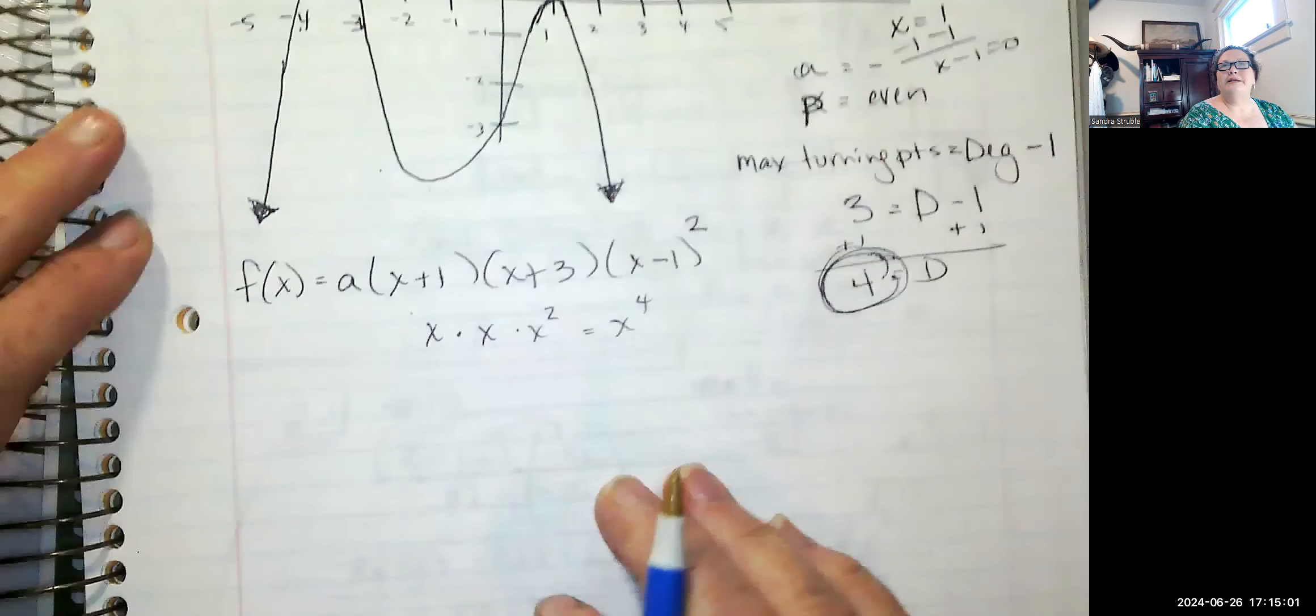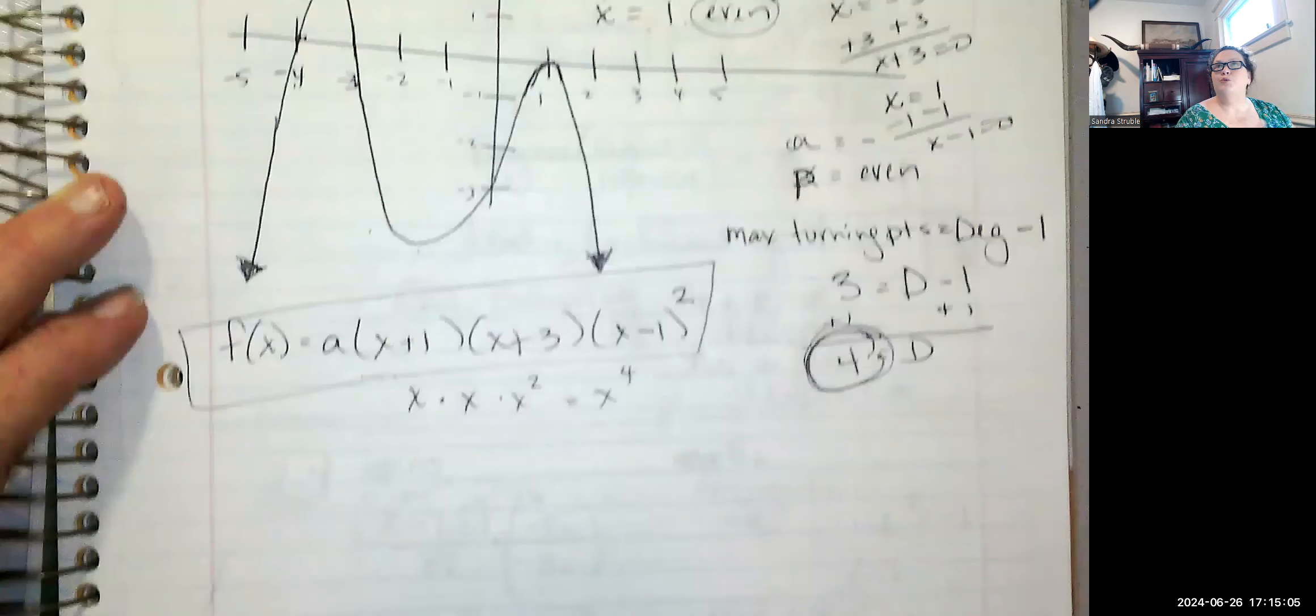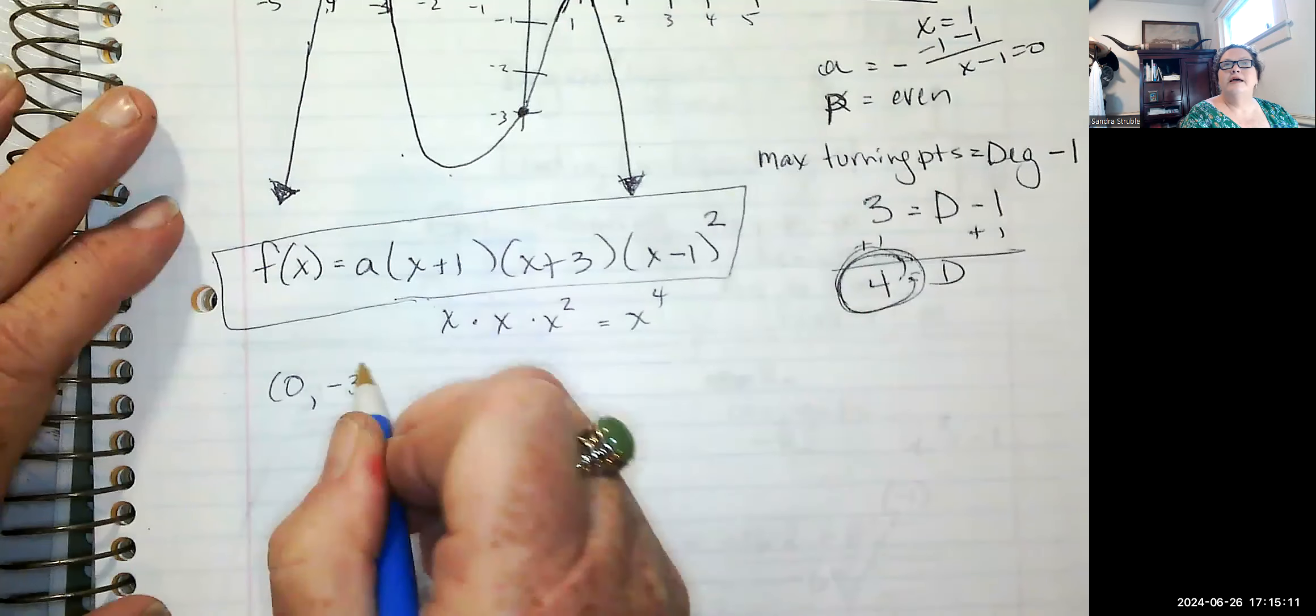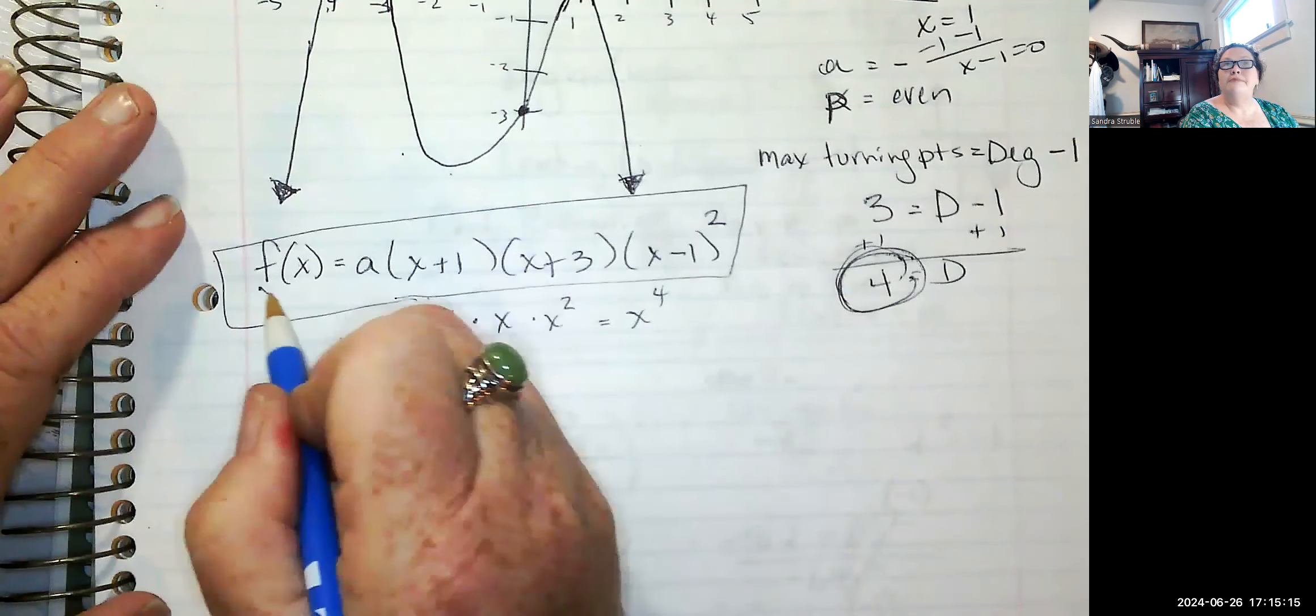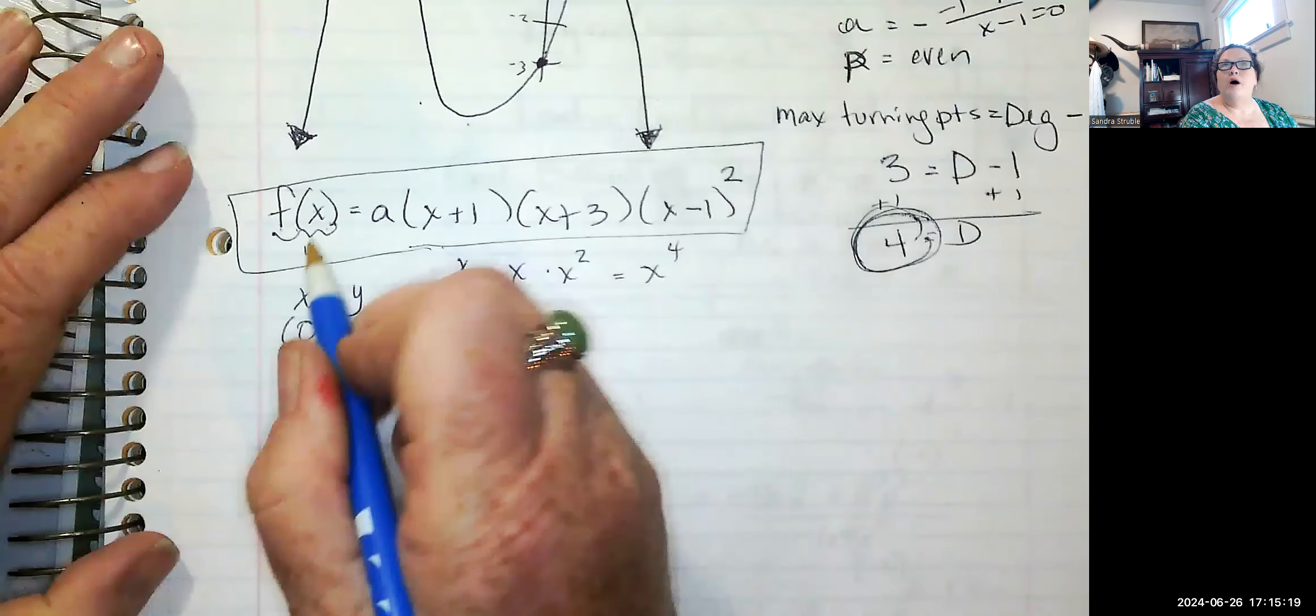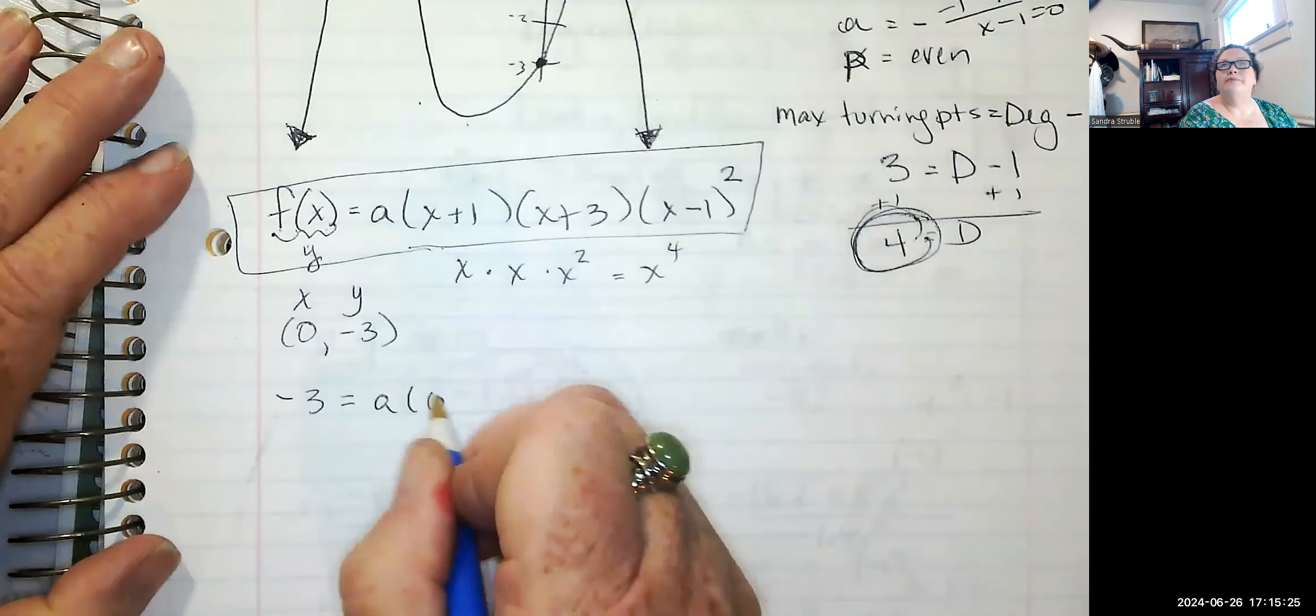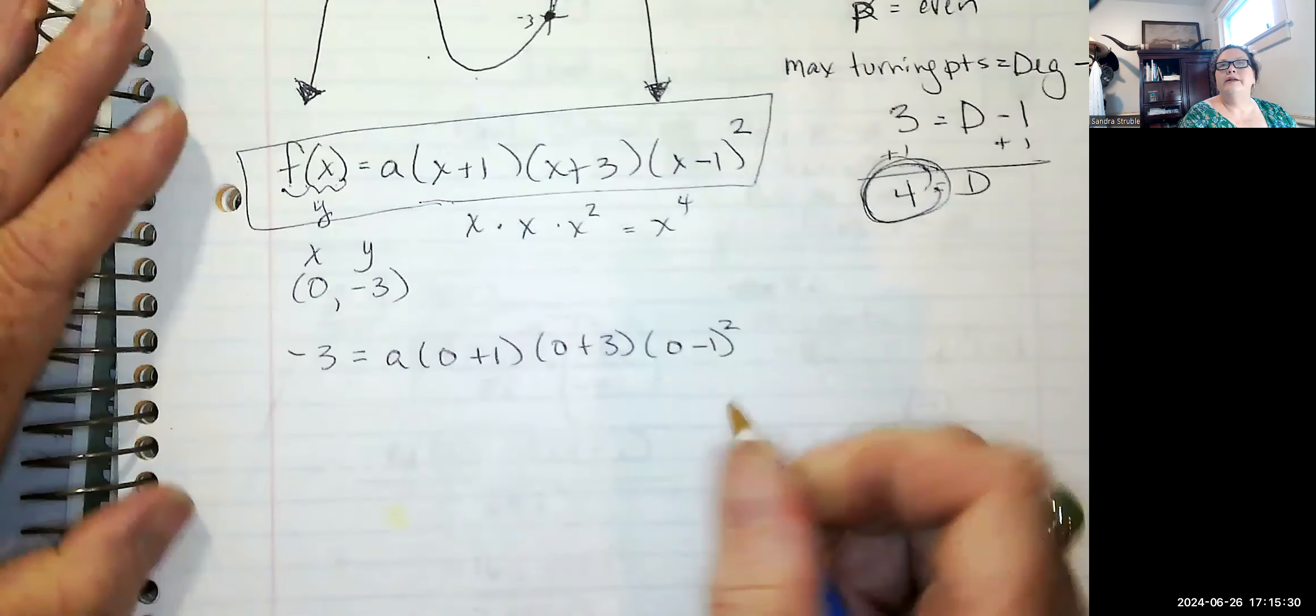So I'm going to take exactly what I've got here and I'm going to use the Y intercept. The Y intercept is at zero, negative three. And I'm going to use this as my X and my Y. Remember that F of X, your function is Y. So where the Y is, I'm going to put negative three. Where each of the X's are, I'm going to put zero.